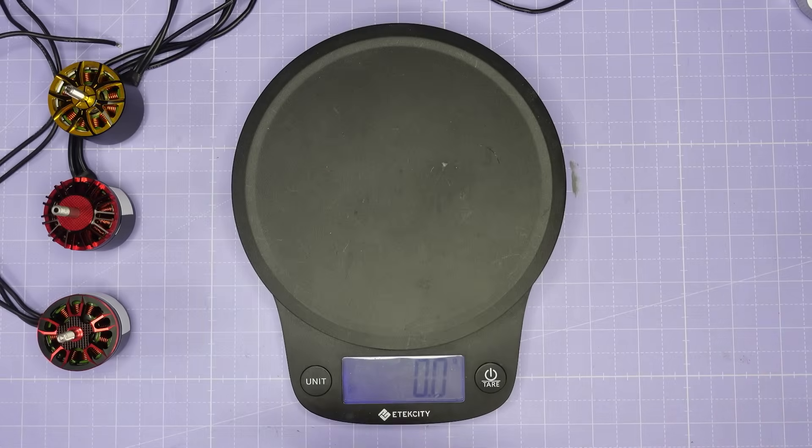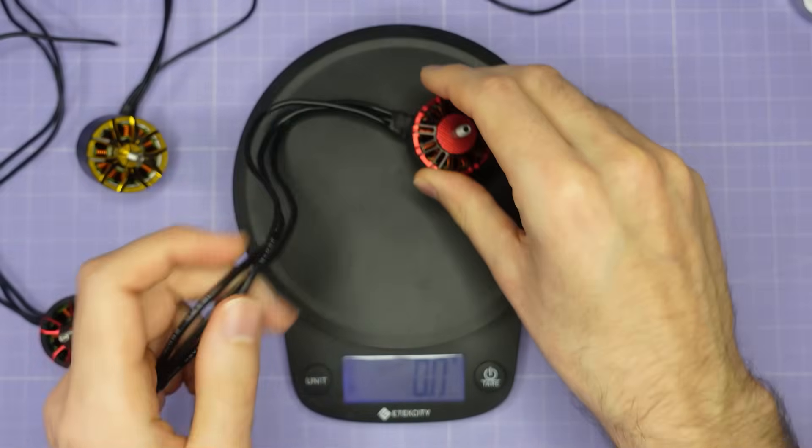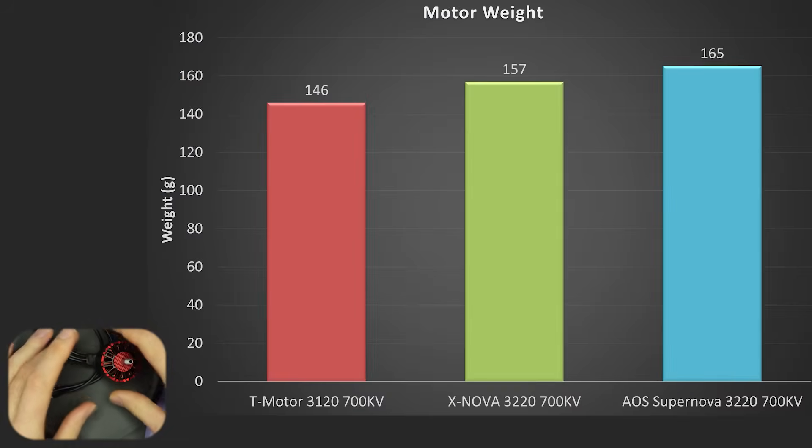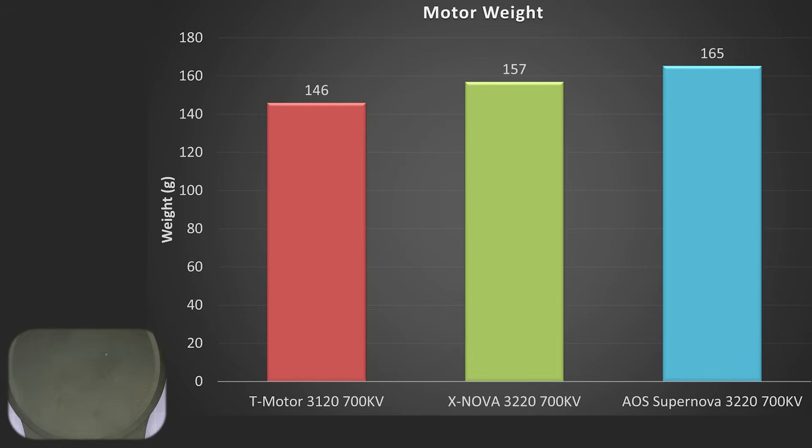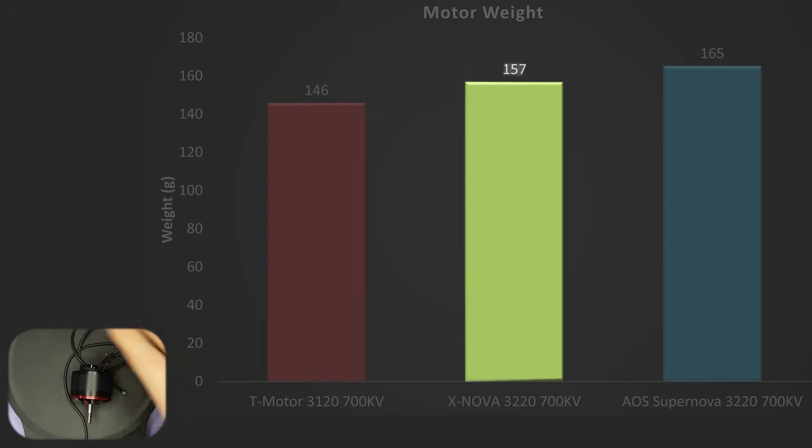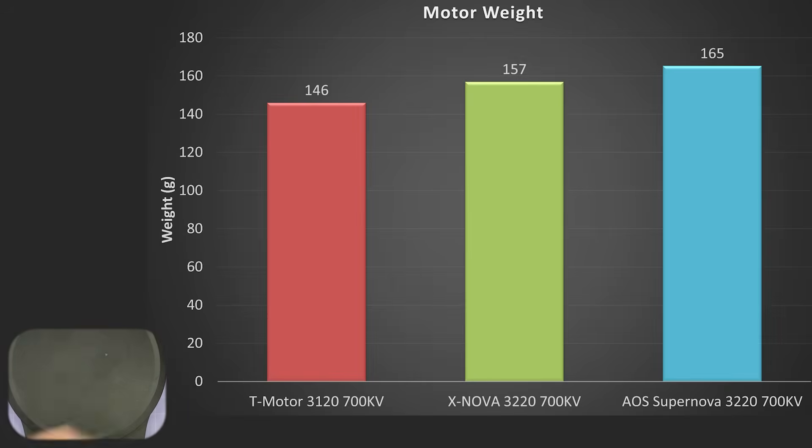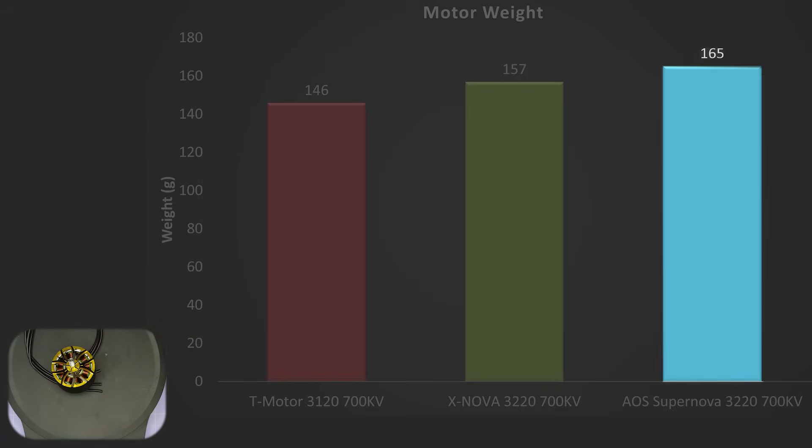The final thing to look at is motor weight so starting with the T-motor 3120 this is with nine inch wires and it comes in at 146.1 grams. If we go to the Xnova with the same nine inch wires that's coming in at 157.2 grams and then the Supernova 3220 again with nine inch wires that's coming in at 165.2 grams.